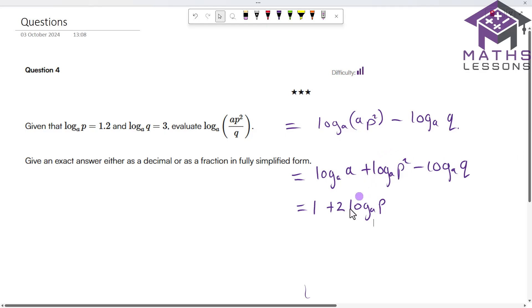That two comes down here when you've got that situation. So you've got p squared, you can bring the two down in front, and I've got minus log a of q. We know log a of q is three, so minus three.